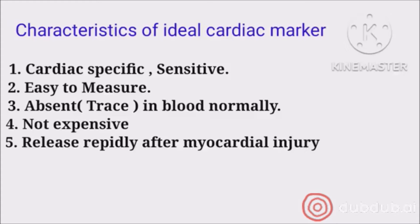The first characteristic is that it should be cardiac-specific, meaning it should be present only in the cardiac muscles and not in other organs. Second, it should be easily measurable. Third, it should normally be present in trace amounts in the blood or be absent. Fourth, it should not be too expensive. Fifth, whenever there is a myocardial injury, it should be released rapidly so that we can detect it quickly and start treatment.